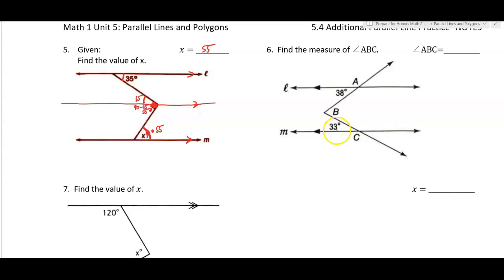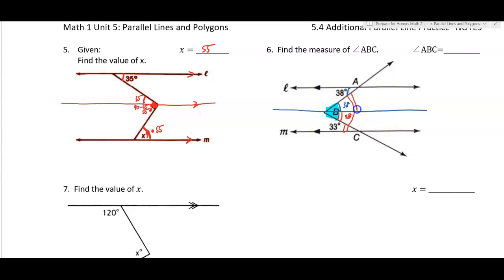Example six — same idea: no direct correlation between these angles. We're looking for the measure of angle ABC. Draw a third line parallel to the other two. This angle is 38 degrees and using alternate interior angles, this is also 38 degrees. The other set of alternate interior angles gives 33 degrees. So 38 plus 33 equals 71 degrees.